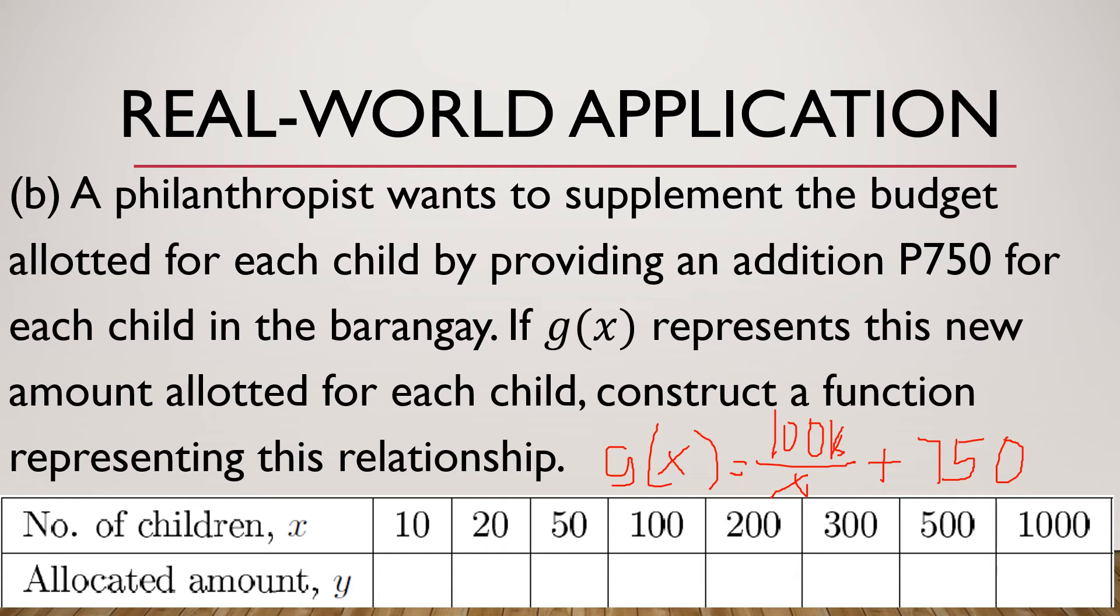What if there are 1,000 children that will be receiving or there are 1,000 children in the barangay, how much will they receive? So a while ago, we computed the amount allotted for each child when the number of children is 1,000 as 100. So 100 plus 750, that will be 850.